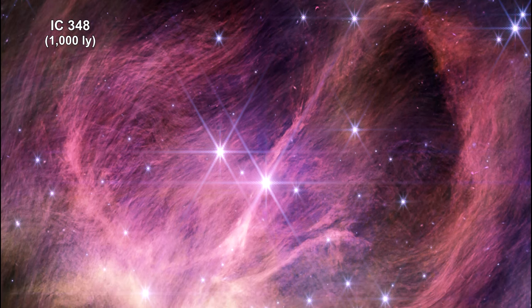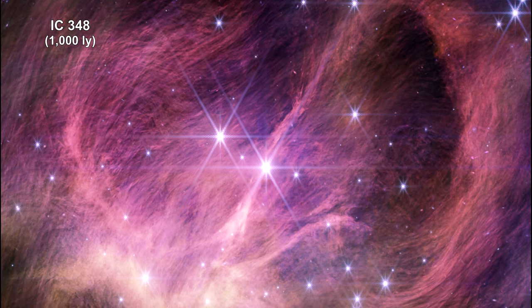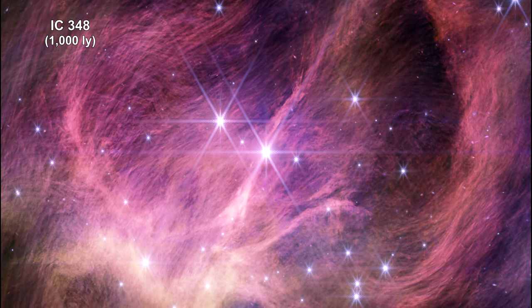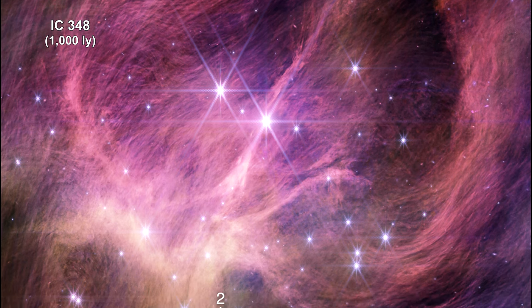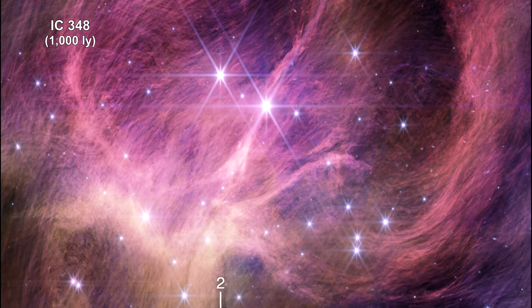This Webb near-infrared camera image shows the central portion of the star cluster IC 348. Astronomers found three brown dwarfs that are less than eight times the mass of Jupiter.